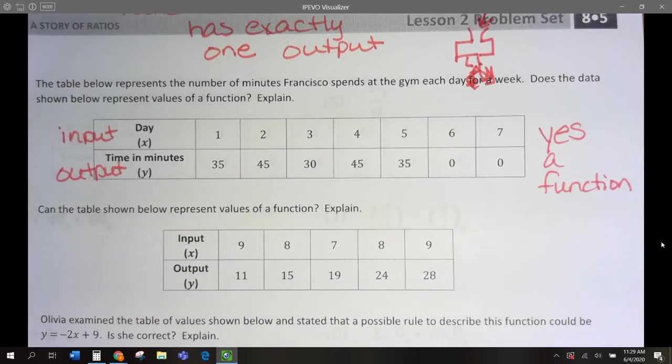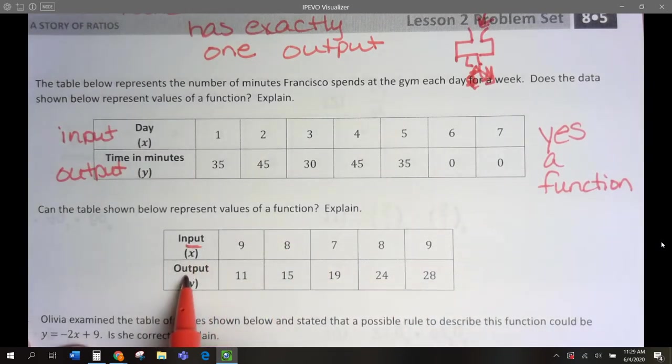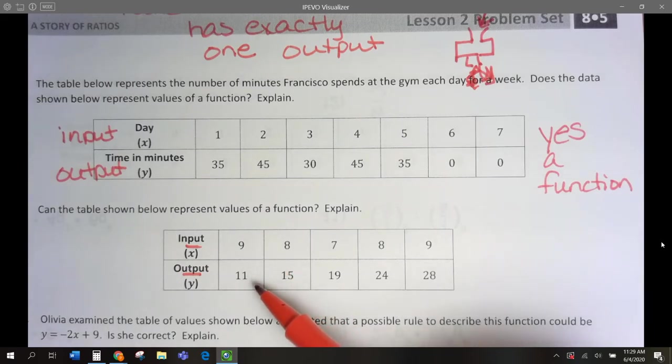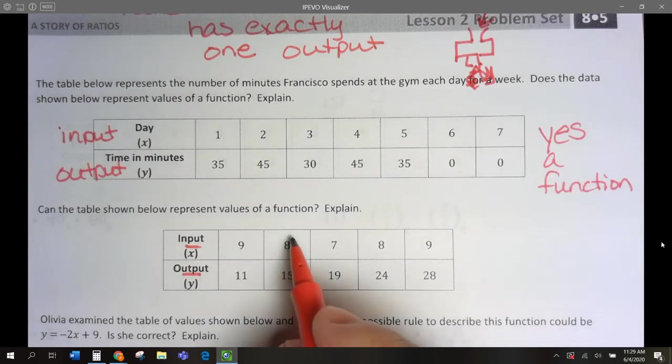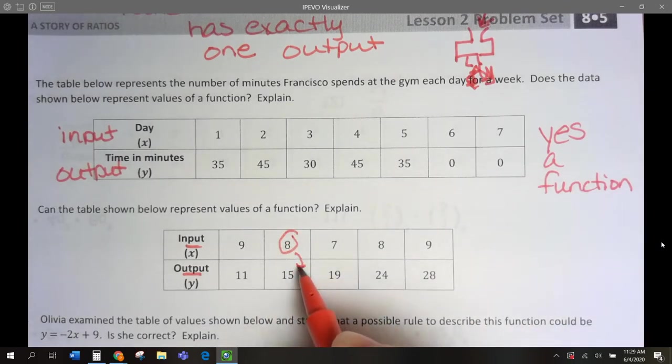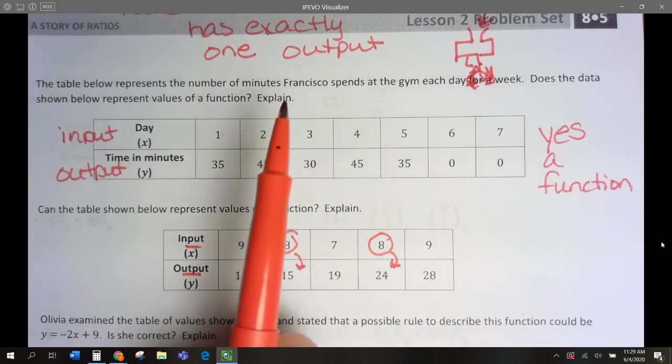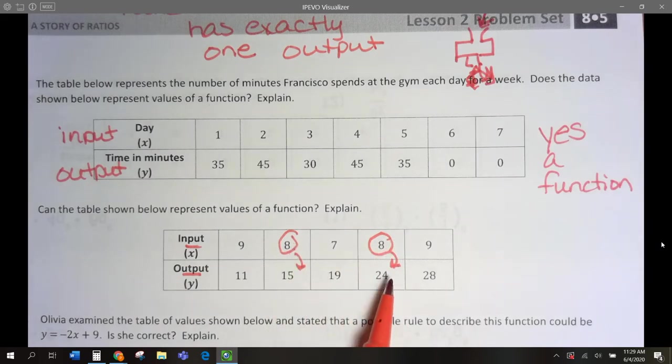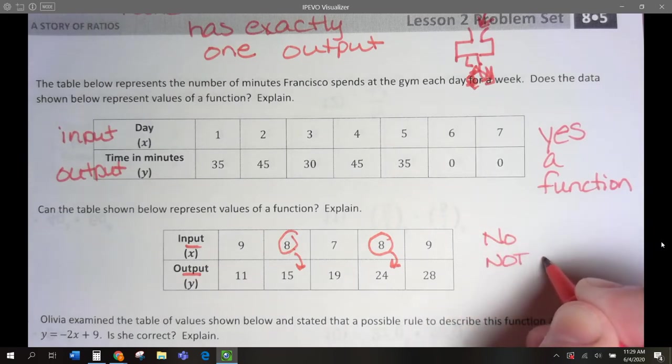Let's look at this one, number 2. Now, let's compare our inputs to our outputs. 9 has an output of 11. 8 has an output of 15. 7 has an output of 19. 8 has an output of 20. Wait, wait, wait. Here we have an input, when we put input 8, we get 15, but here when we input 8, we get 24. So this input of 8 gives me two different outputs. Remember, each input can only have one output, but this input has two different outputs. So no, not a function.